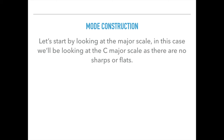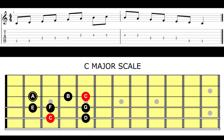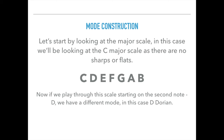So how do we construct a mode? Let's start by looking at the major scale — in this case the C major scale, as there are no sharps or flats. The C major scale contains the notes C, D, E, F, G, A, and B. Now if we play through the scale starting on the second note, D, we have a different mode. In this case it will be called D Dorian, and that contains the notes D, E, F, G, A, B, and C.